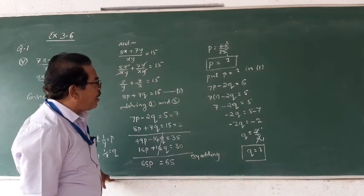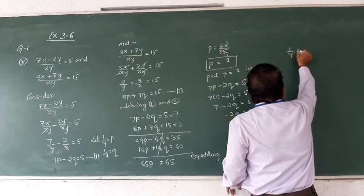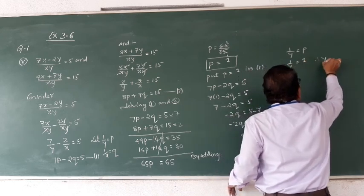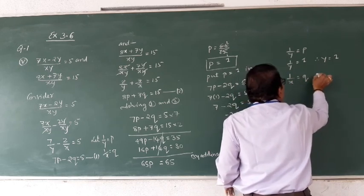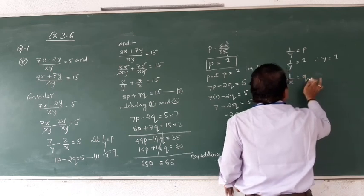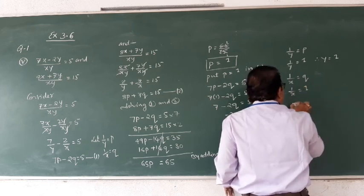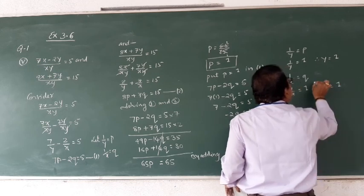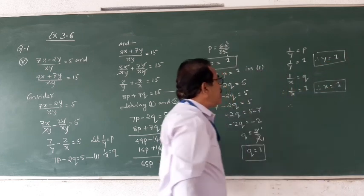Now let us find the values of x and y. We know 1 by y equals to p, so 1 by y equals to 1, therefore y equals to 1. And 1 by x equals to q, so 1 by x equals to 1, therefore x equals to 1. So x equals to 1 and y equals to 1 are the solutions.